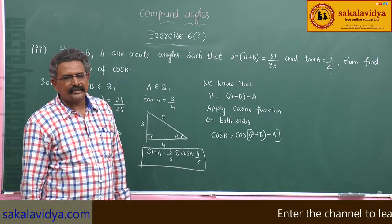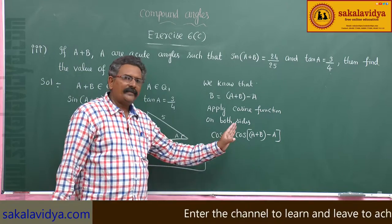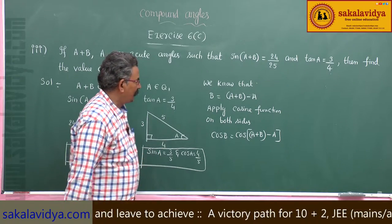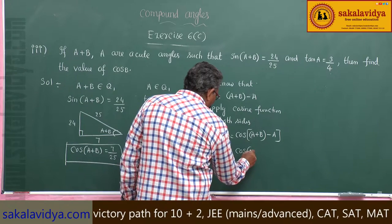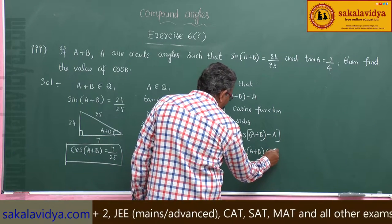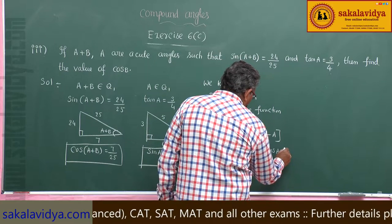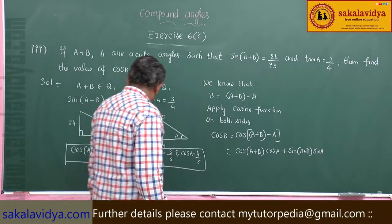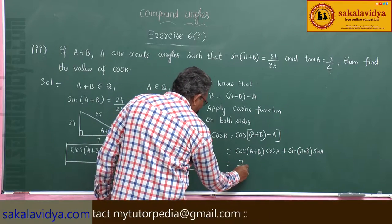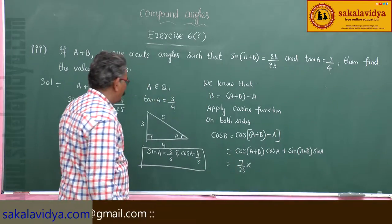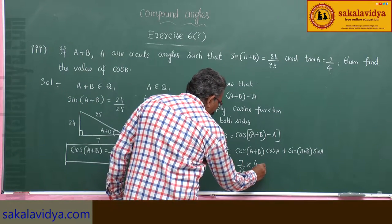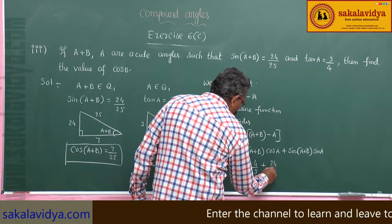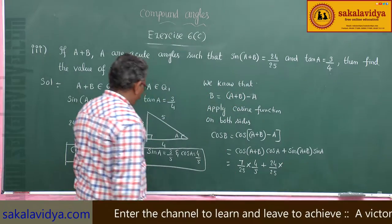Let us say A+B = x and A = y, so we need cos(x - y) = cos x·cos y + sin x·sin y. Substituting back, cos B = cos(A+B)·cos A + sin(A+B)·sin A.